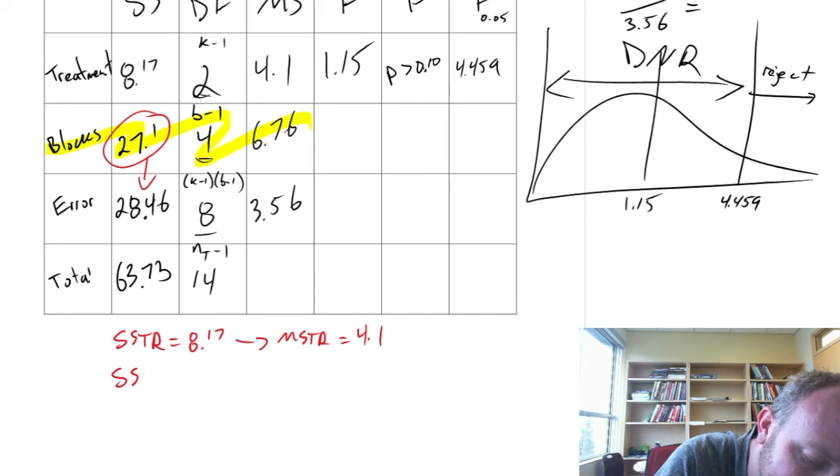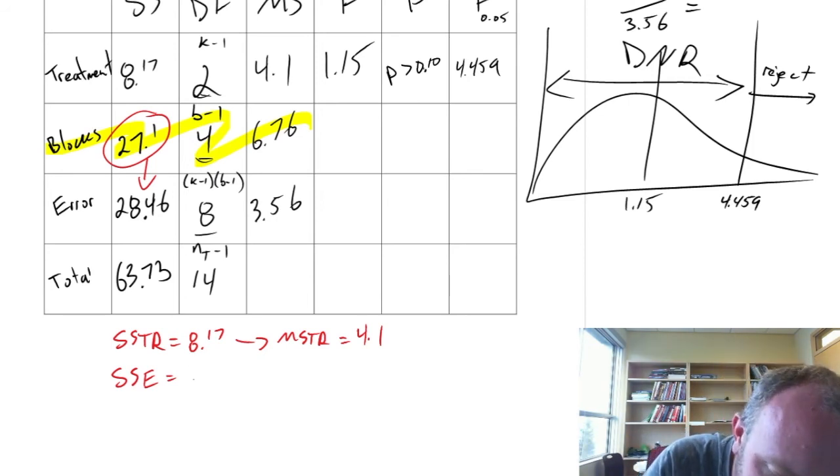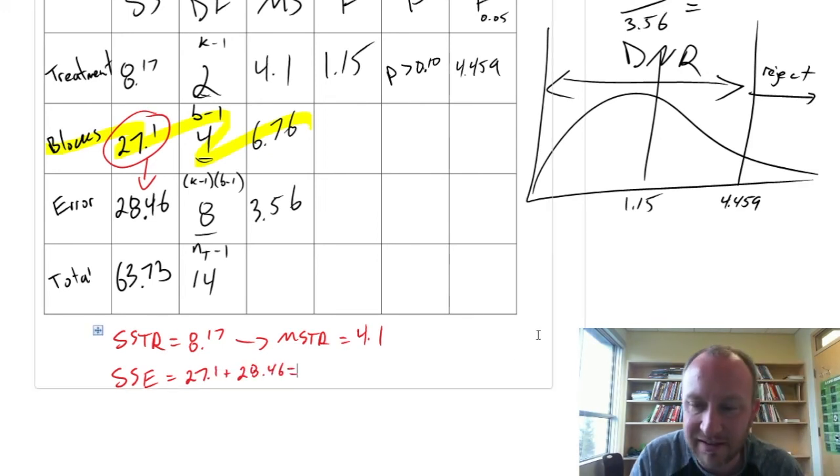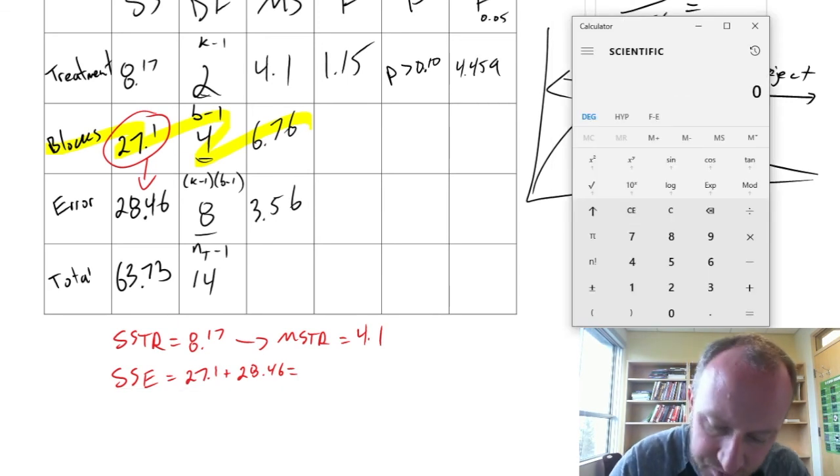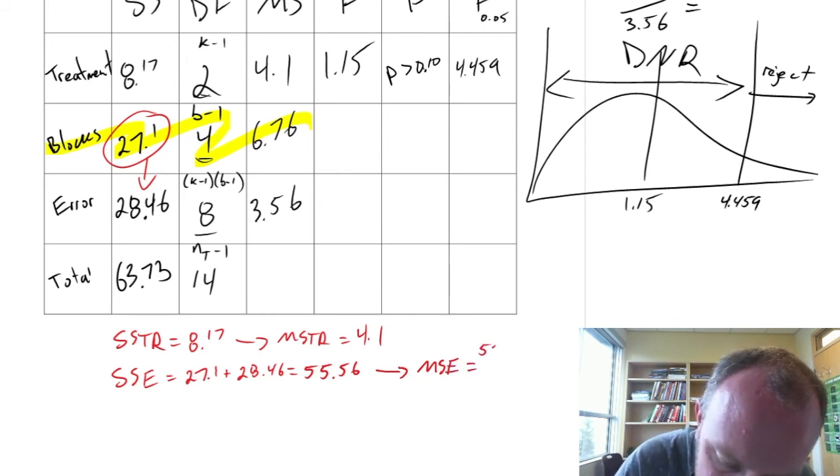But this sum of squares would have been lumped into our sum of squares error. So what we would have had for SSE. If we were to not have taken into account that source of variation. This would have been 27.1 plus 28.46. So SSE would have been 27.1 plus 28.46. Would have been 55.56. Which means that MSE. Am I running out of room? No.